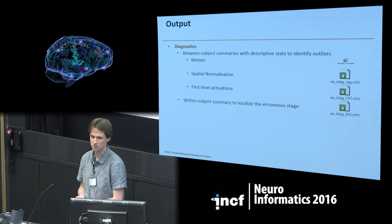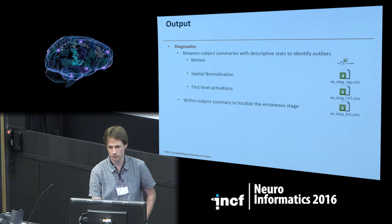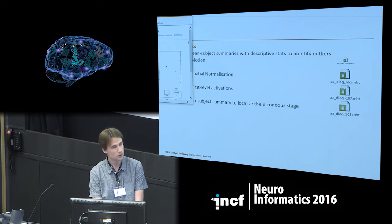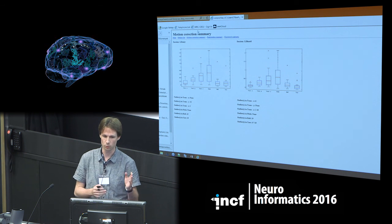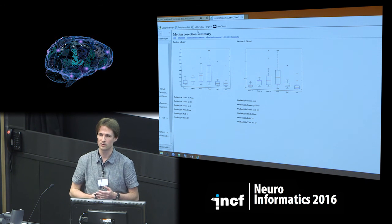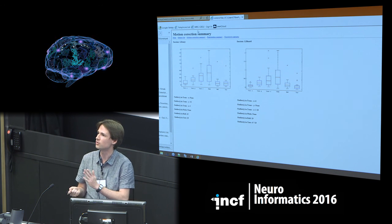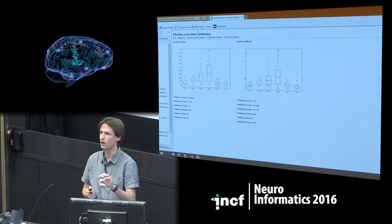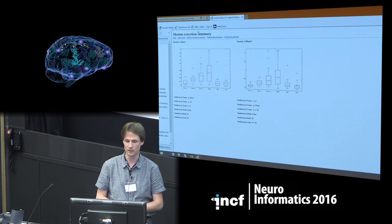The outputs are probably the most important part. The diagnostics are one of the key strengths of AA. It generates between-subject summaries and descriptive stats to identify outliers. For example, for a motion correction summary, it shows box plots across the motion correction parameters. A rule of thumb is that if a subject moves more than two millimeters in one direction, it's considered excessive motion. But what's more important is heterogeneity in the data — if all subjects have motion below half a millimeter and one subject moved one and a half millimeters, that's a heterogeneity you may need to tackle.